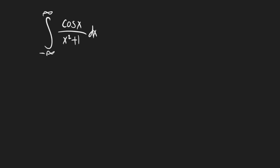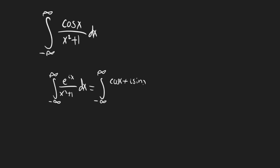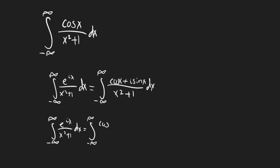In order to do this method, there are two things we need to set up first. The first is we need to rewrite this integral. I'm going to show you a related integral and connect the two. If we wanted to solve this integral, one way would be to write it as the integral from negative infinity to infinity of cosine of x plus i sine of x — that's just Euler's relation where e^(ix) equals cosine of x plus i sine of x. By the properties of integrals, we can rewrite this as two separate integrals: the integral from negative infinity to infinity of cosine(x) over (x² + 1) dx, plus i times the integral from negative infinity to infinity of sine(x) over (x² + 1) dx.